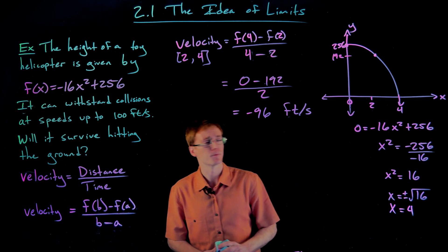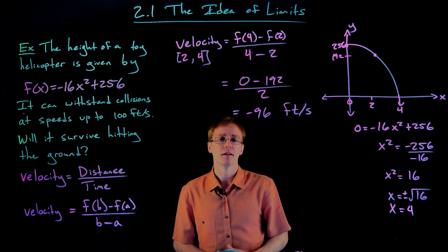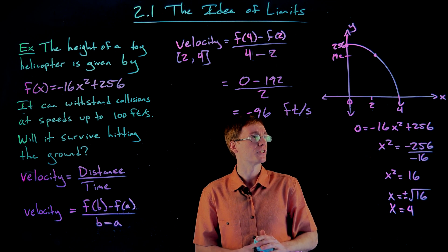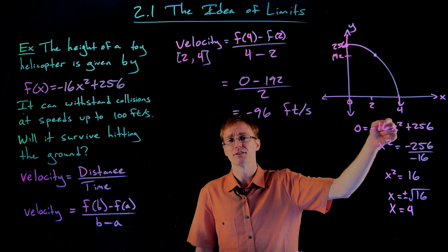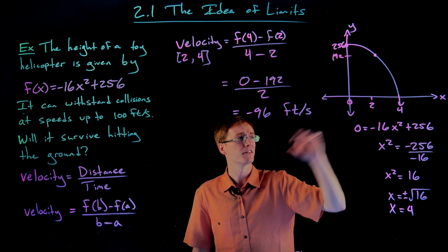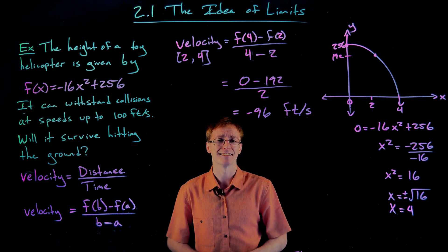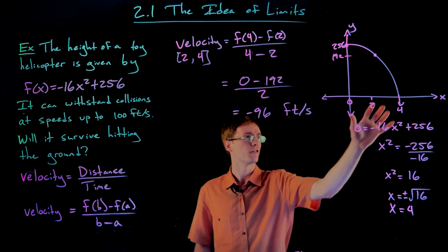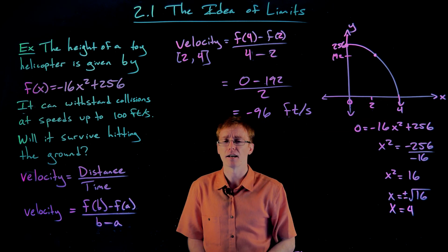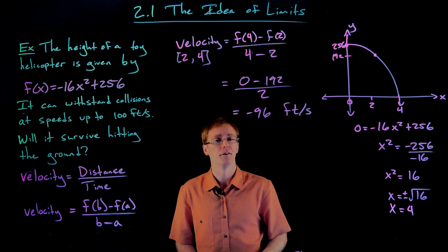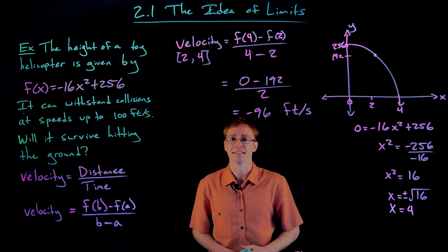Our process can't find instantaneous velocity directly — we do it indirectly by making our time intervals shorter and shorter, getting closer to an instant in time while always containing the moment of interest at x equals four. So if we look at an even smaller interval from 3.9 seconds to four seconds, there's not much time for the velocity to change, so the average velocity will be very close to the actual instantaneous velocity at four seconds.